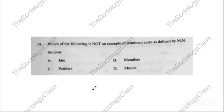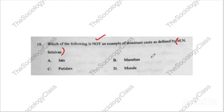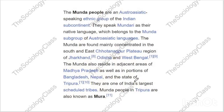Question number nineteen: 'Which of the following is NOT an example of dominant caste as defined by M.N. Srinivas?' The correct answer is D — Munda. Munda is a tribe, not a dominant caste. I have already taught dominant caste on this channel, please watch it.